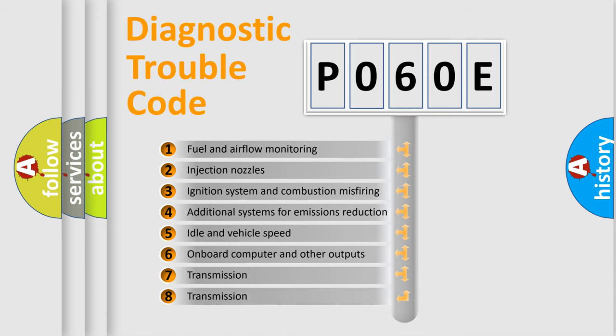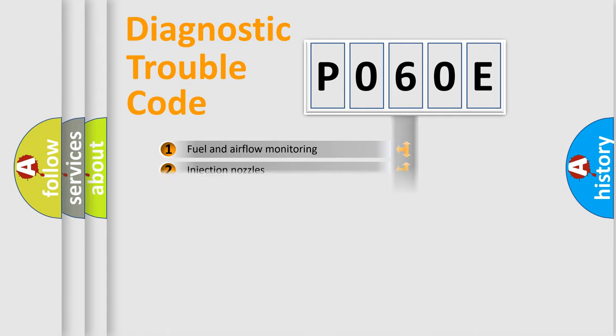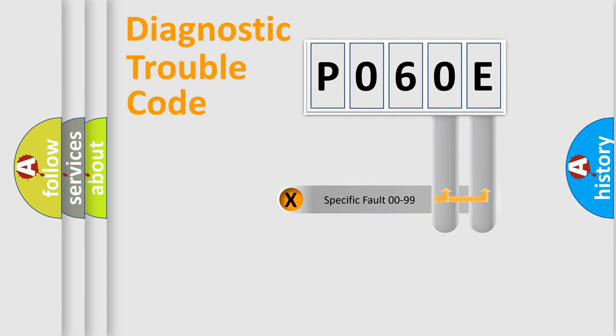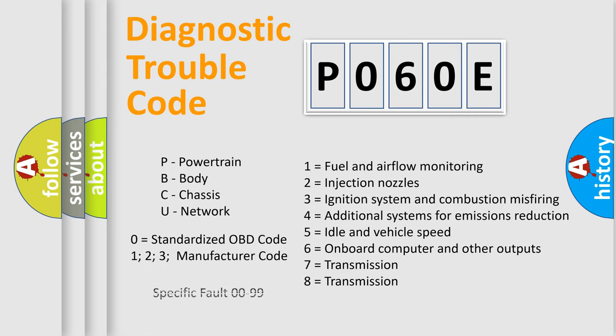The distribution shown is valid only for the standardized DTC code. Only the last two characters define the specific fault of the group. Let's not forget that such a division is valid only if the second character code is expressed by the number zero.